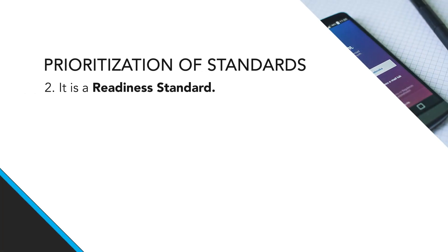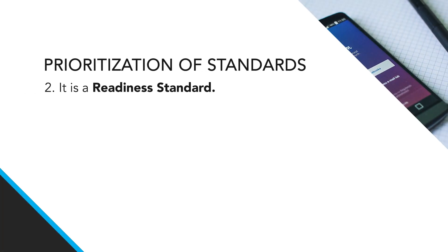The second reason to prioritize a standard is that it's a readiness standard — the language doesn't necessarily endure, but the standard is a prerequisite. For example, a kindergarten standard might say 'when reading, demonstrate left-to-right orientation.' That's a prerequisite for reading. There aren't many middle or high school standards about left-to-right orientation, which tells us this is a prerequisite — not less important, just different in why it's there.